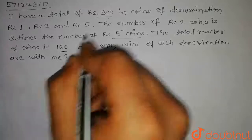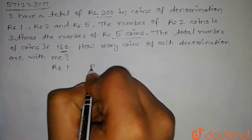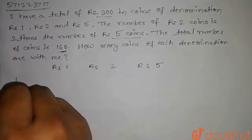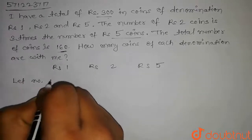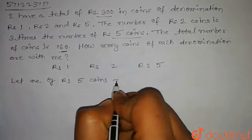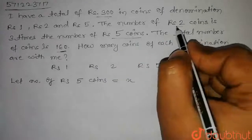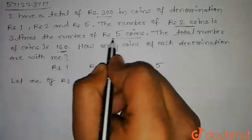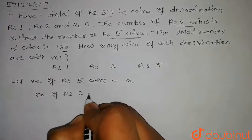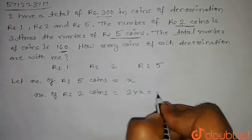In this question, I have 3 types of denomination: Rs.1, Rs.2 and Rs.5. So if we let the number of Rs.5 coins equal to x, then according to the question, the number of Rs.2 coins is 3 times the number of Rs.5 coins. So the number of Rs.2 coins will be 3x.